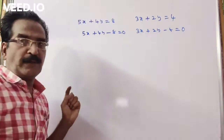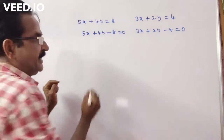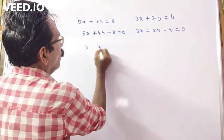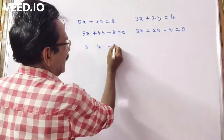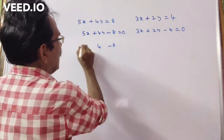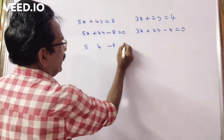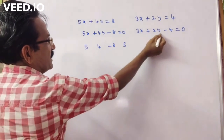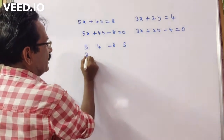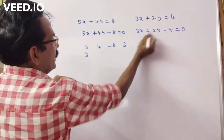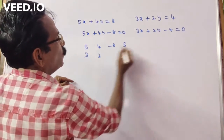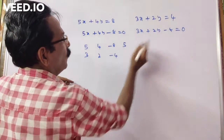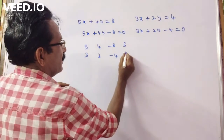First, you have to write the coefficients. For the first equation: 5, 4, minus 8, and again write 5. For the second equation: 3, 2, minus 4, and again write 3.